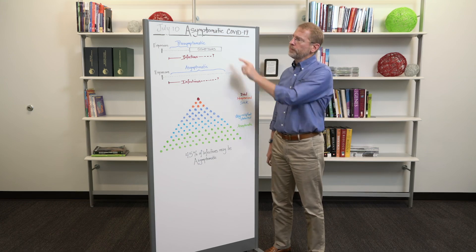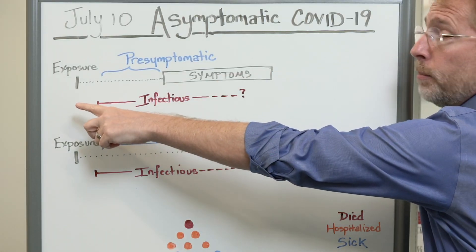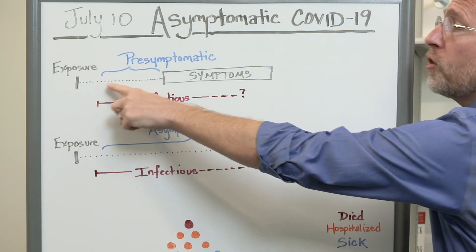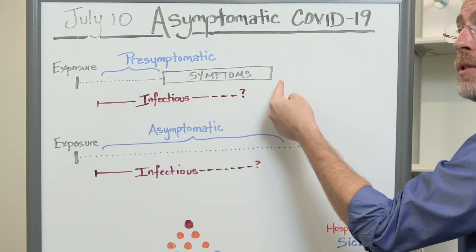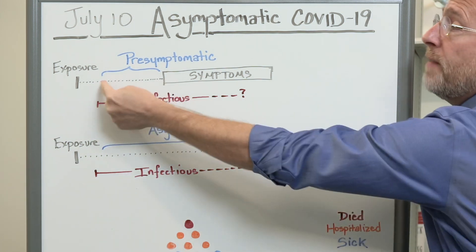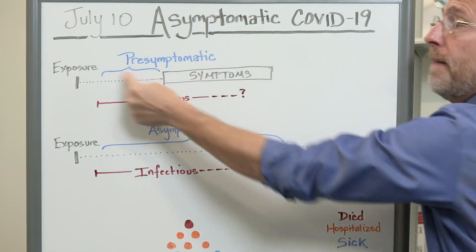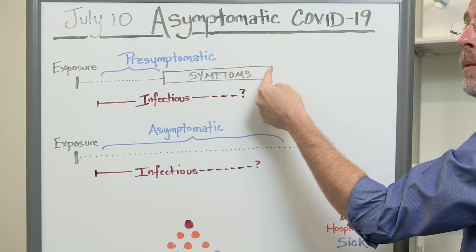Let's look at two different examples. This is an individual who is exposed to the virus, becomes infected, and after some period of time develops symptoms. They're infectious during this window even when they have no symptoms at all. This person is pre-symptomatic in this window and then develops symptoms.